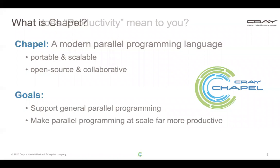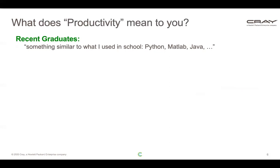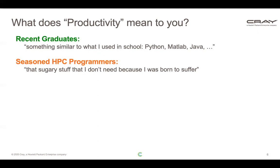This term 'productivity' is a loaded term — it tends to mean different things to different people. For example, if you talk to a recent graduate or student, productivity to them is similar to what they learned in school, which these days can often be something like Python, MATLAB, or Java. When you talk to a seasoned HPC programmer, you get a response like, 'that's that sugary stuff I don't really need because I was born to suffer.'